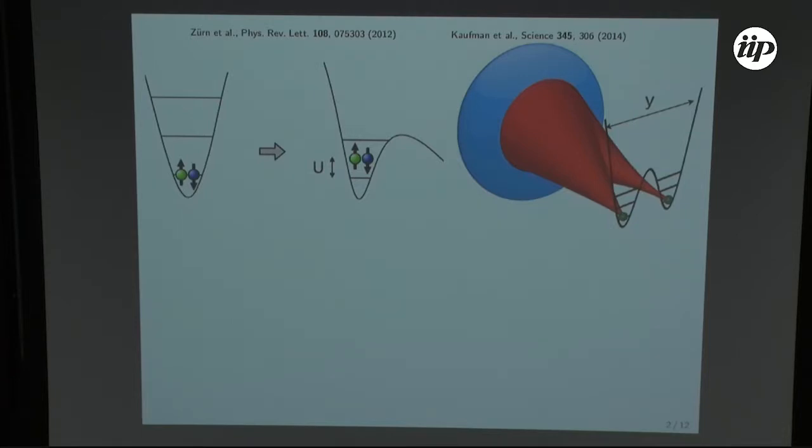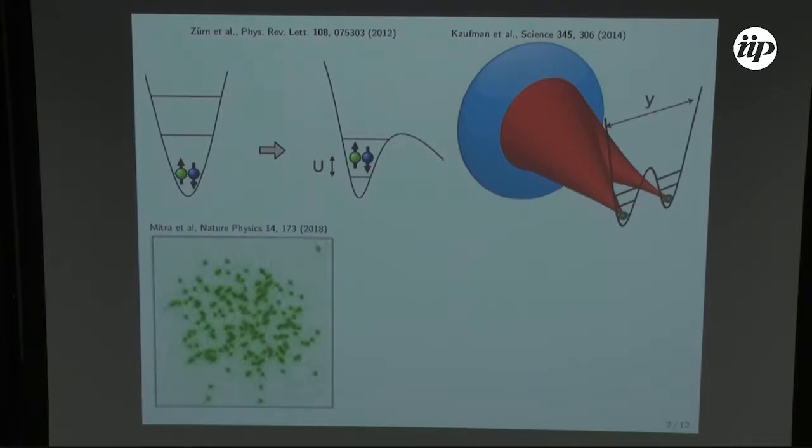To measure the spectrum and single particle density but recently people also started to measure the correlations. So one of the examples is the atomic microscopes so one can see each atom in the system and from that one can get higher order correlations.